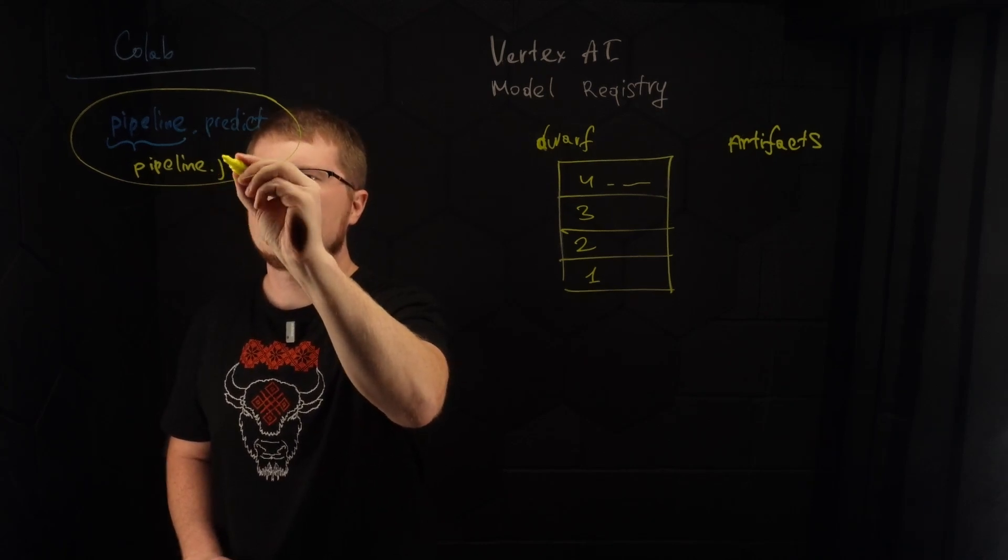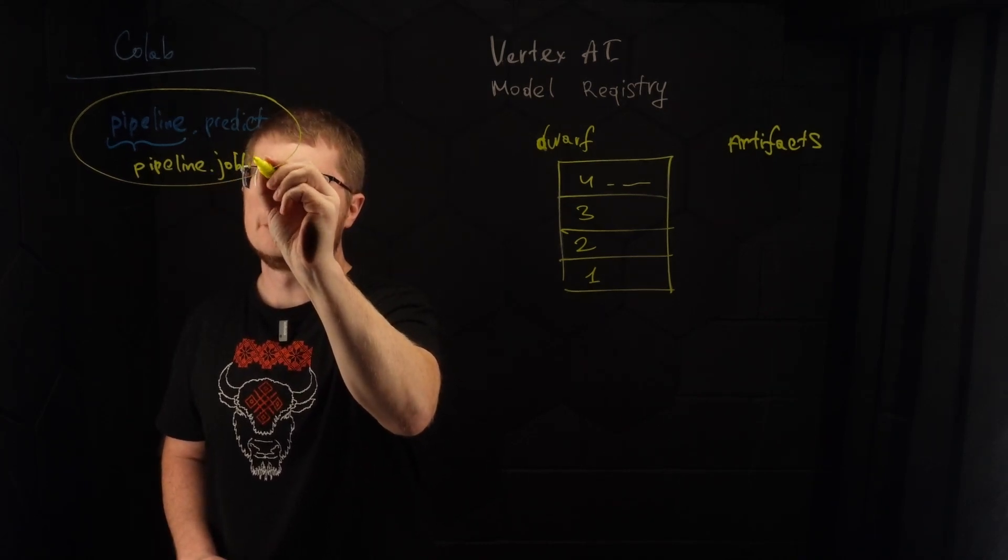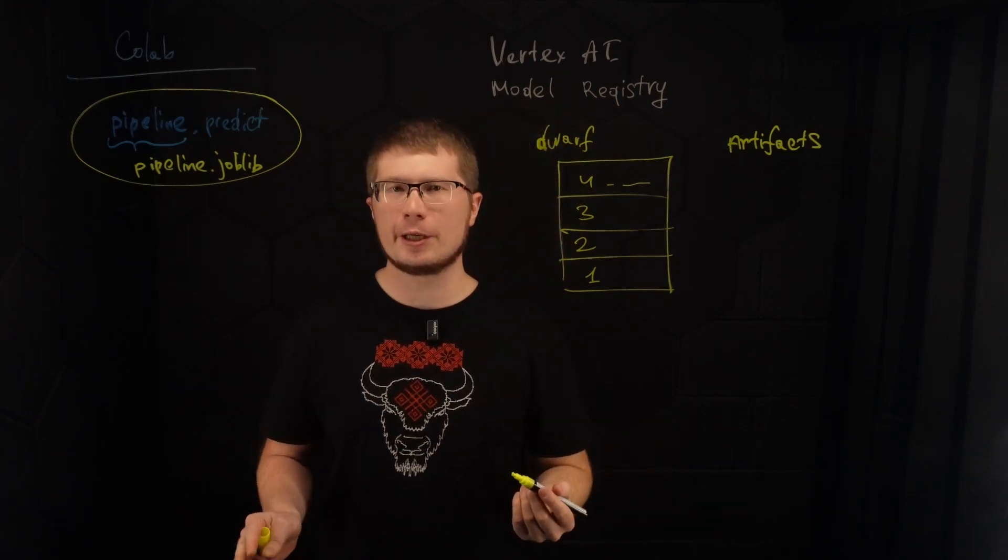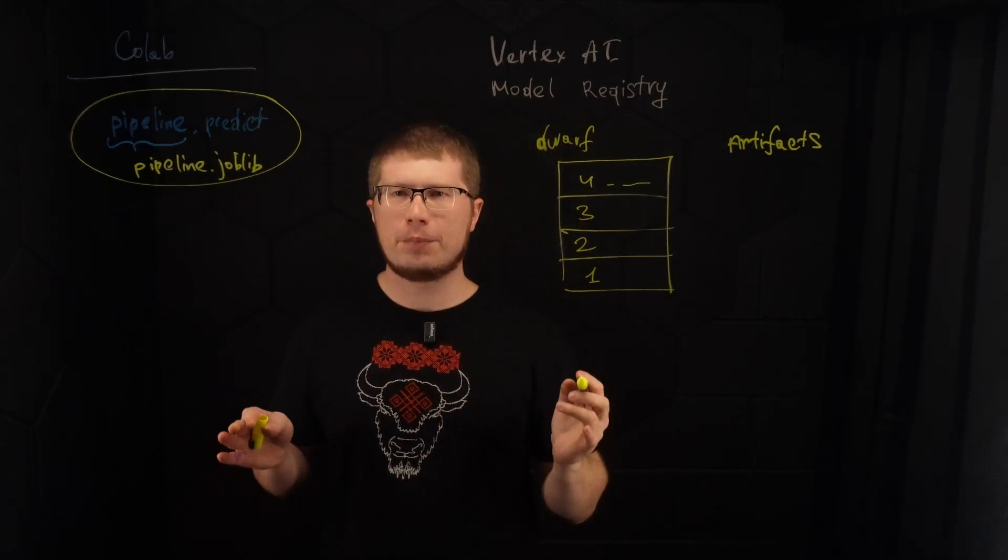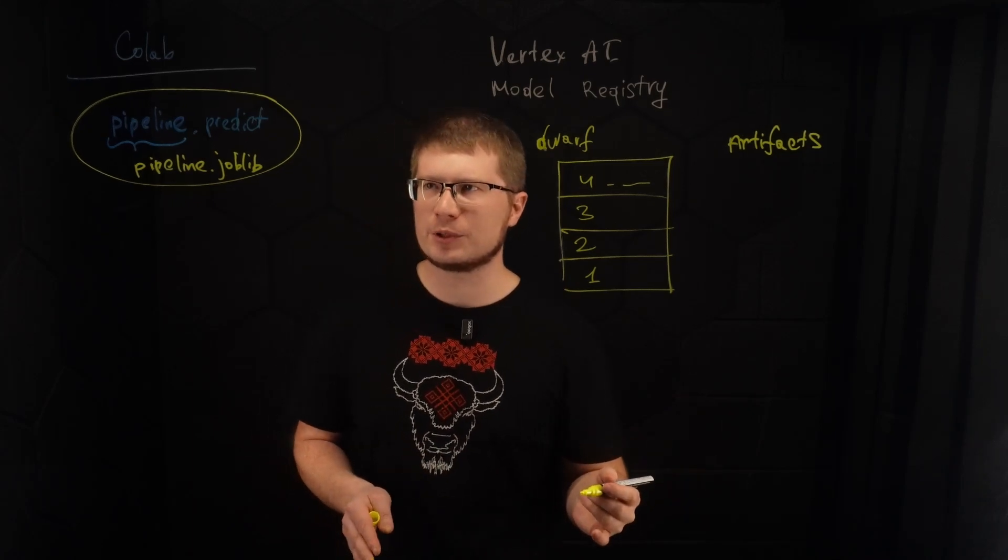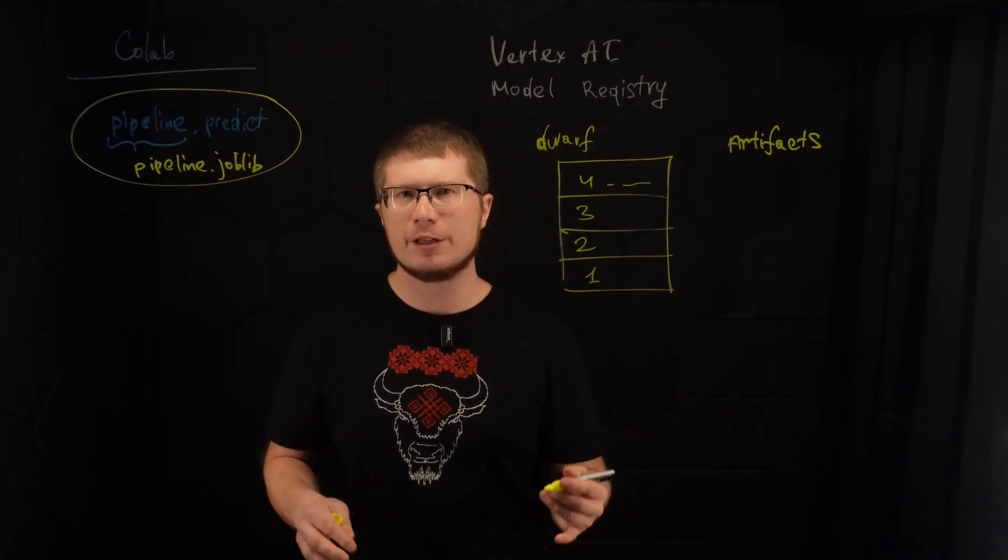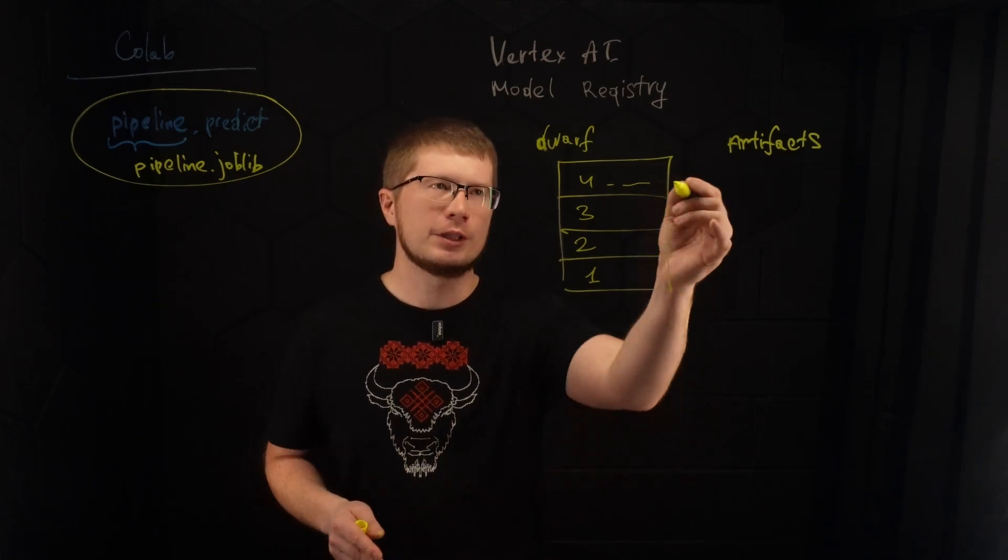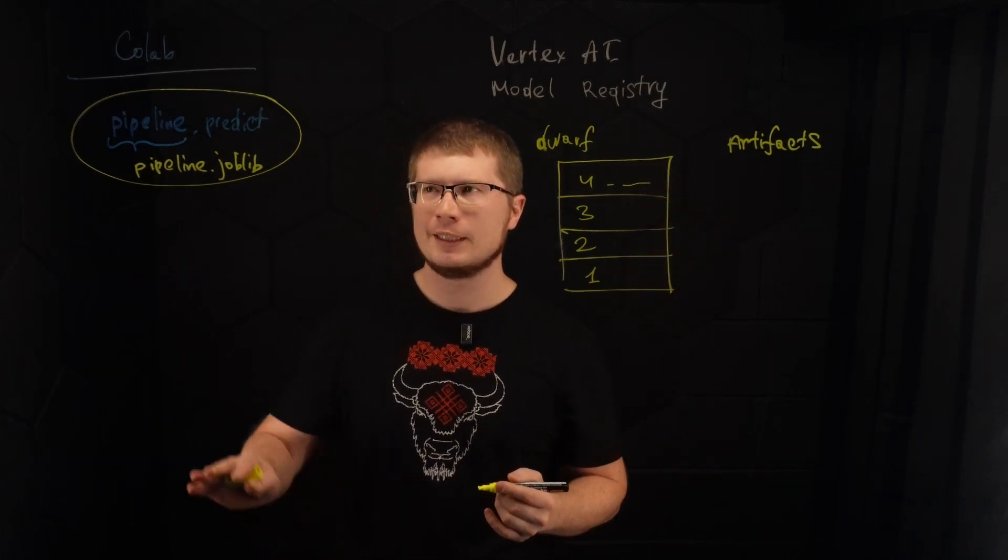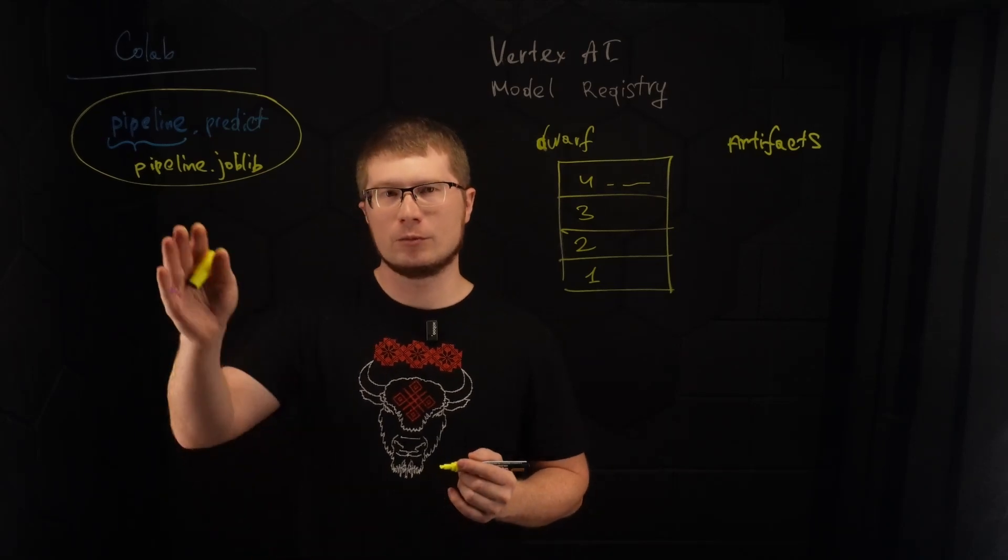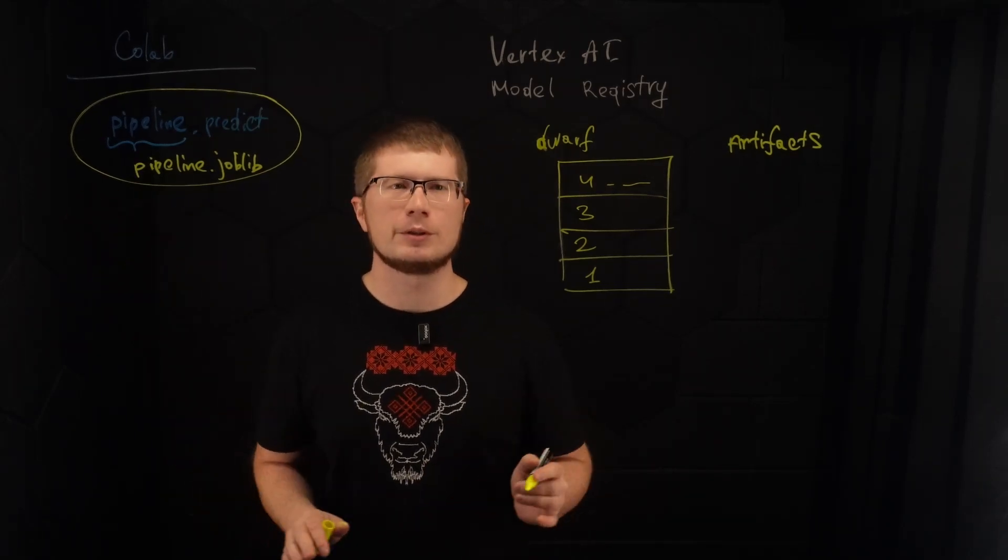So it will be pipeline.joblib. Potentially, we can have a Python module as artifacts as well, because sometimes we want very tricky pre-processing happening or other logic encoded right in the model version. In our case, it's just pre-processing and inference in one object, so we don't need to do that.